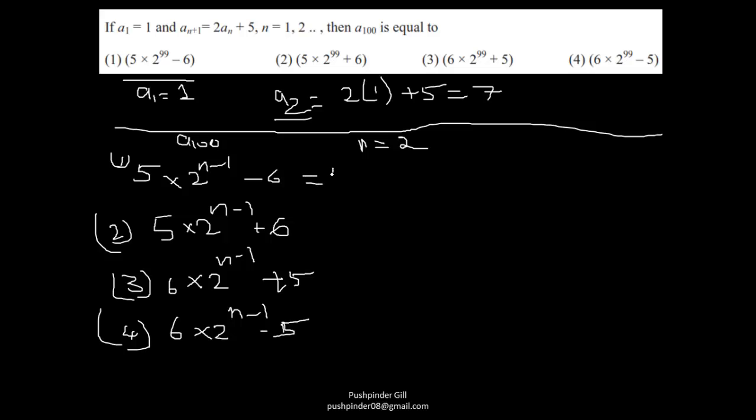If you use this option, that is going to give you 5 into 2^(n-1), that is 2^1, minus 6. So this is 10 minus 6, which is 4, but we need 7, so that means it's gone. Similarly, this is going to become 5 into 2 plus 6, that is again more than 7, gone.